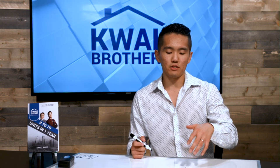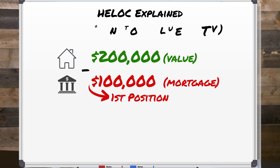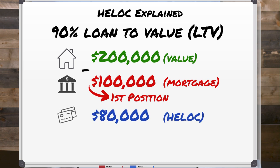This is called a second position home equity line of credit, because your existing mortgage is your first position — it comes before the new HELOC. Using the 90% loan to value, we get an $80,000 HELOC. It's second position because we already have the $100,000 mortgage as the first position, and the $80,000 HELOC comes after.